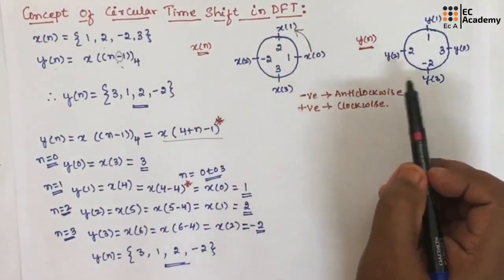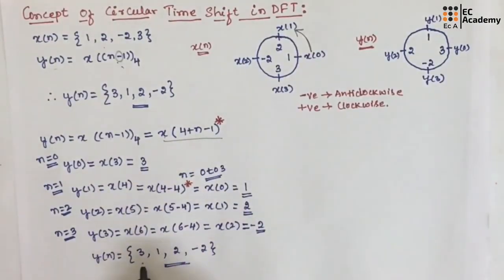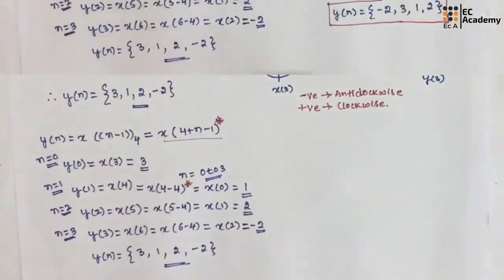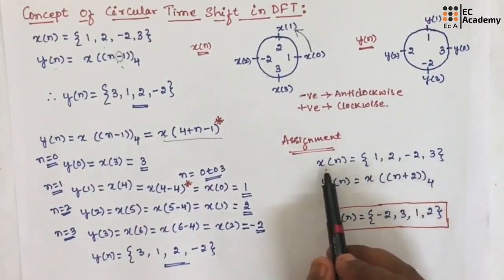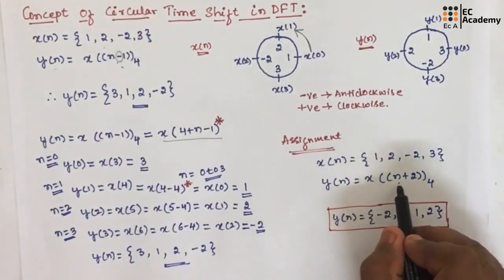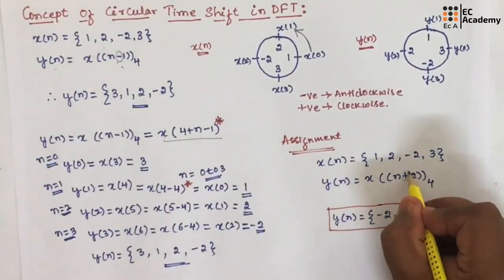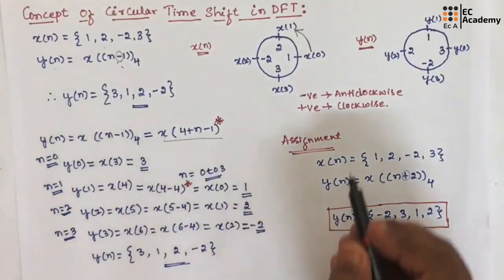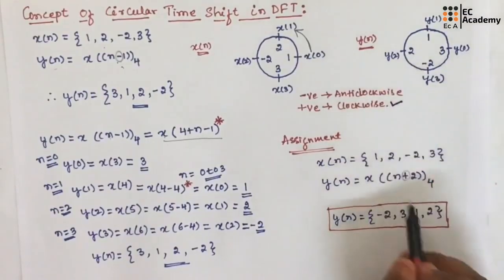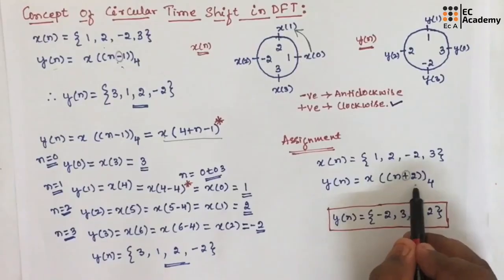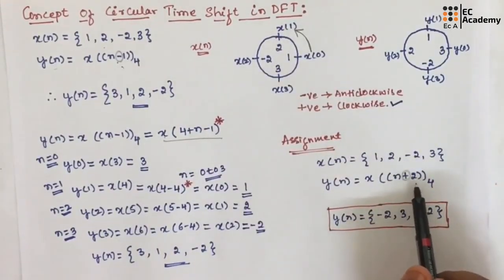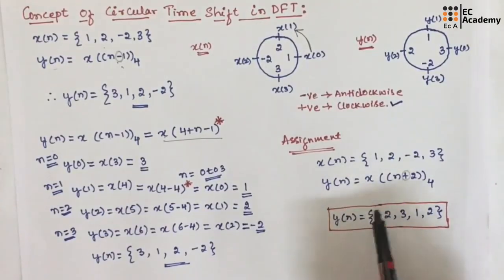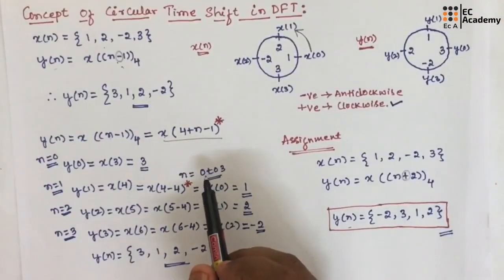These are the two methods. You can use the unit circle method, or alternatively use the algebraic method to find the circular shift of the given sequence. As an assignment, take the same sequence for x of n and find the new sequence for x of (n plus 2). Since it is a positive sign, you need to rotate the unit circle of x of n in the clockwise direction by two steps to get y of n. This is the concept of circular time shift in DFT. Hope you have understood the concept. Thank you.